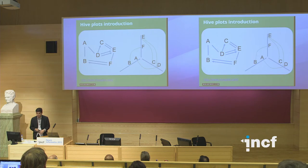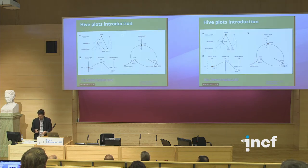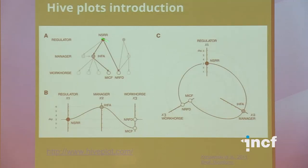So Krzywinski in 2011 wrote a really important paper proposing hive plots, and this is how they work. Imagine you'd have a network with three layers. NSRR on the first layer, IHFA on the second, MICF and NRFD on the bottom. Now you want to do something equivalent to the scatter plot, so you want to be able to put it on an axis. For a network, a sensible thing to use for a metric is the degree of a node. So take three different axes for the three different layers.